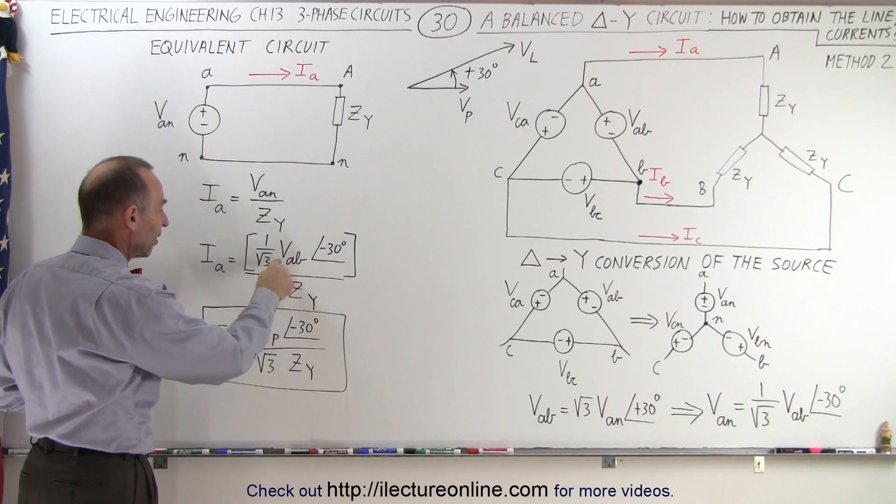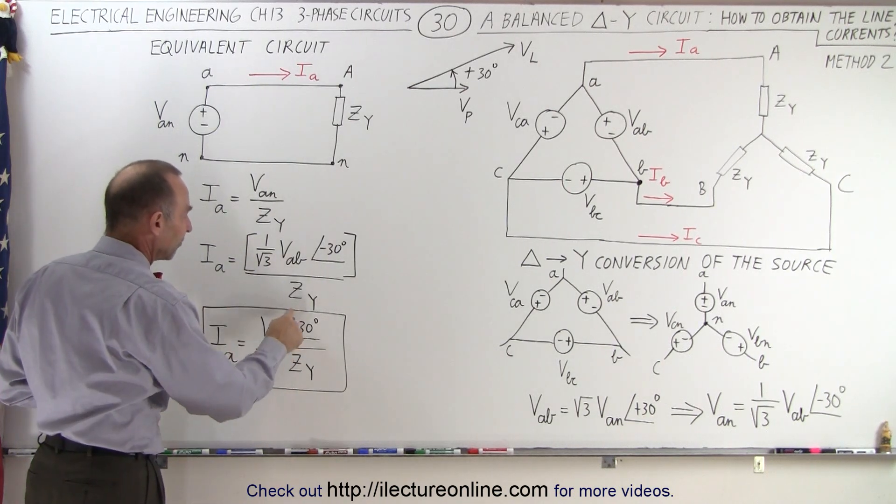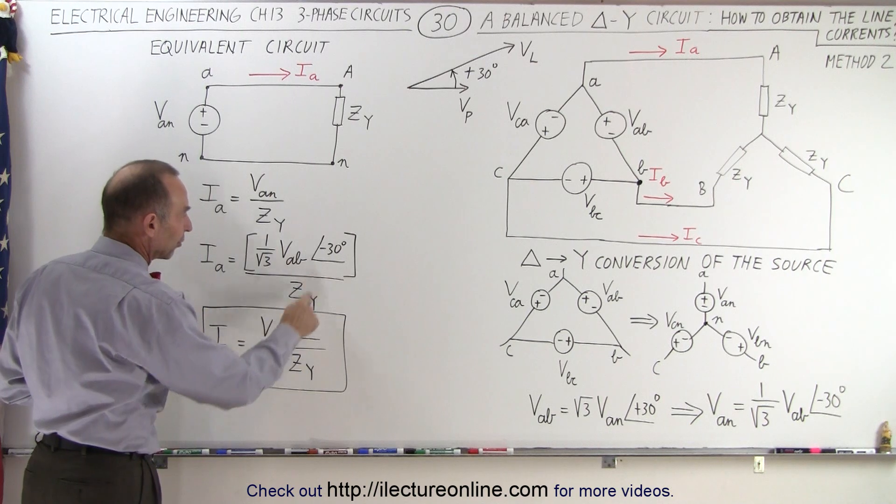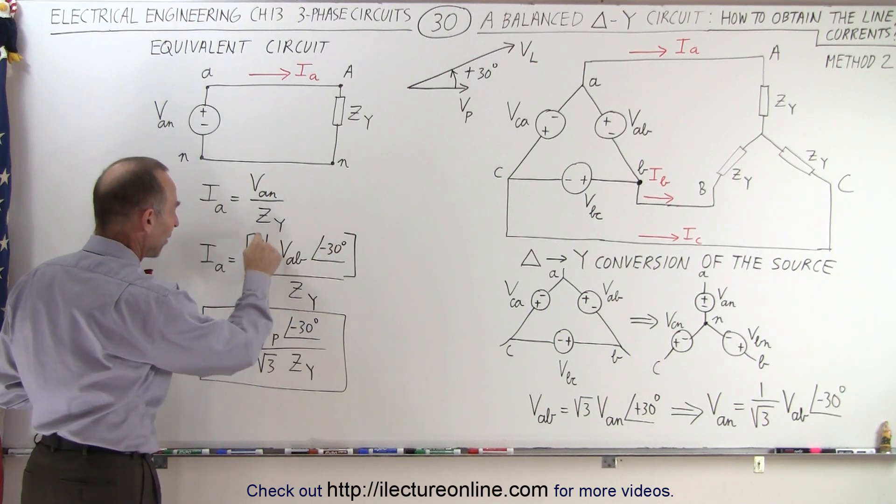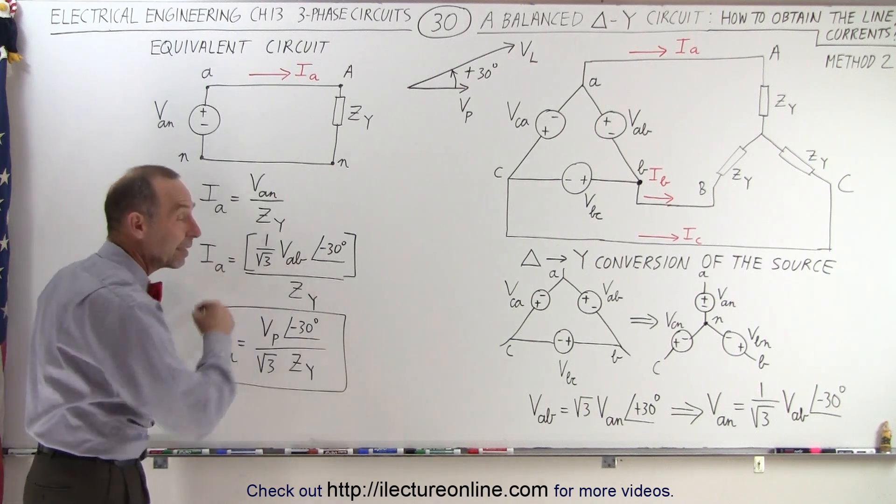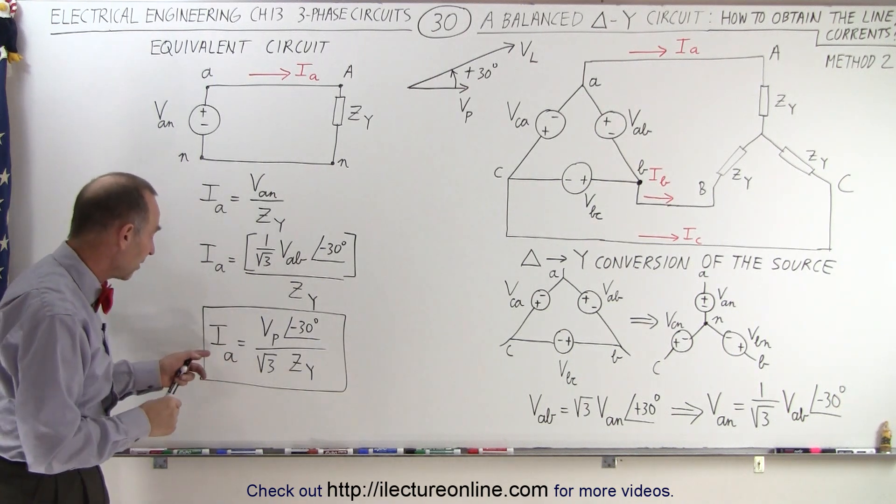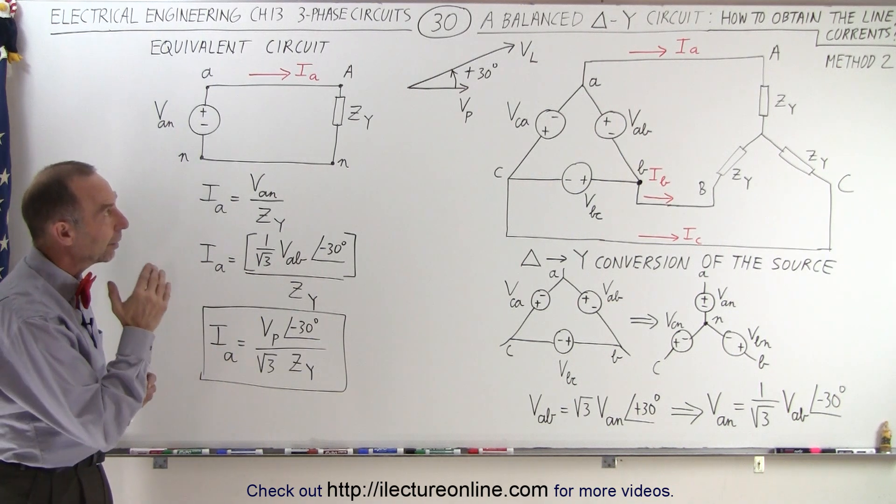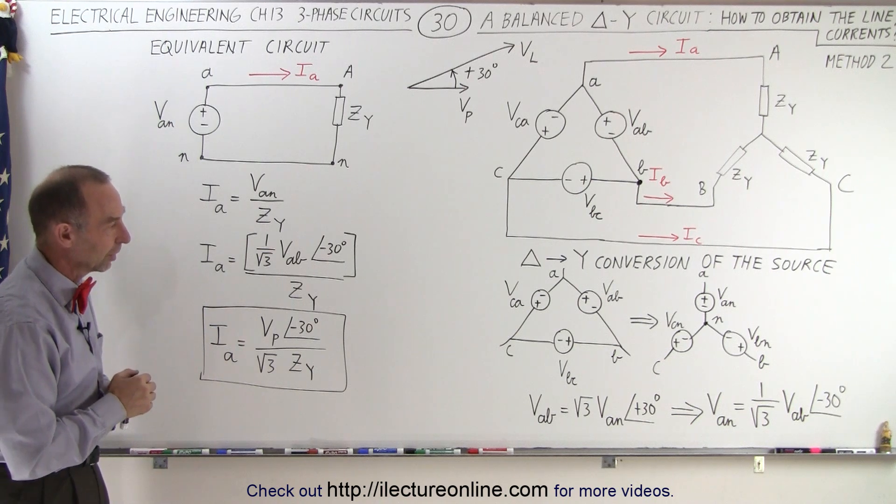We have now a phase angle difference of minus 30 degrees that came from this, we have 1 over the square root of 3, and the impedance, and we end up with the exact same equation for the line current in a delta to Y circuit.